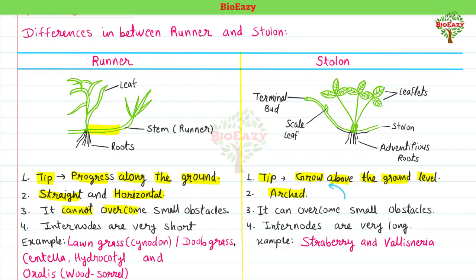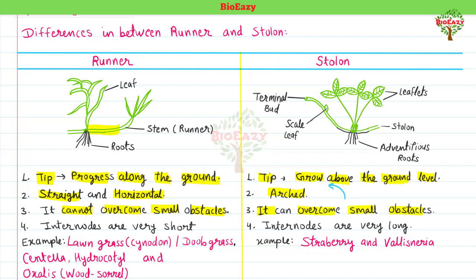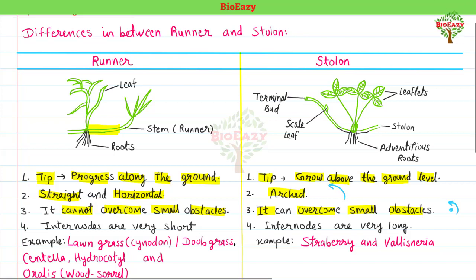The third difference: a runner cannot overcome small obstacles because it grows parallel to the land level, so it cannot cross small barriers. But a stolon can overcome small obstacles because it grows in an arc shape — suppose there is an obstacle, the stolon grows over it like this, easily crossing small obstacles.